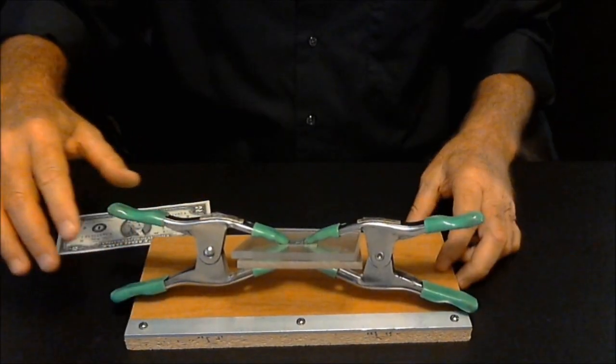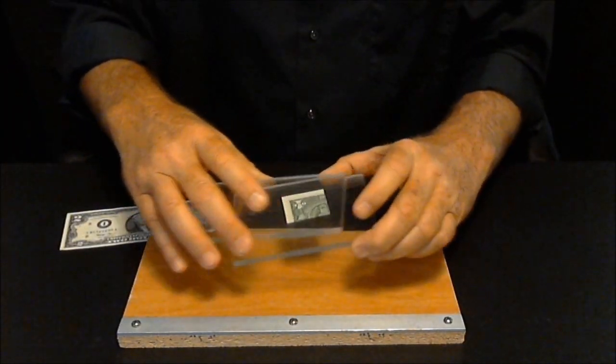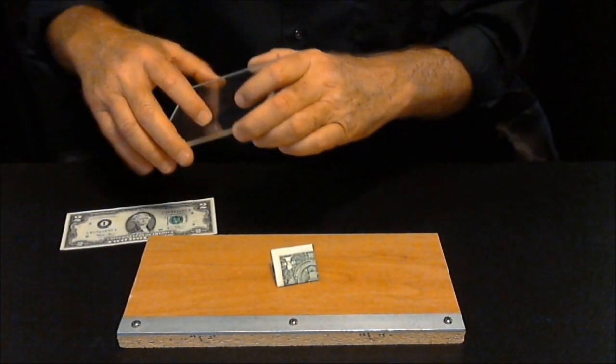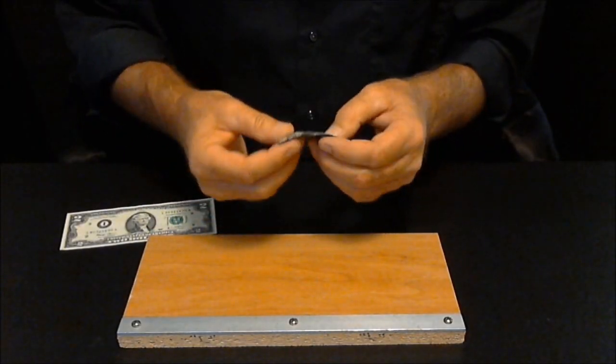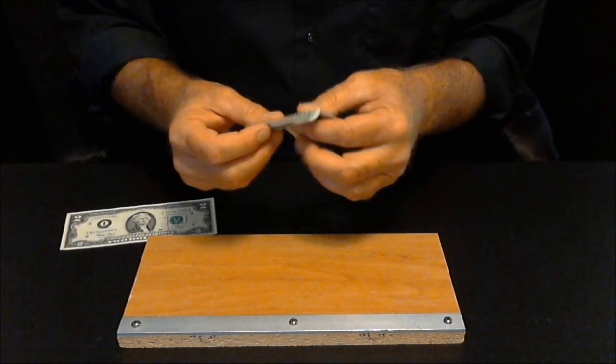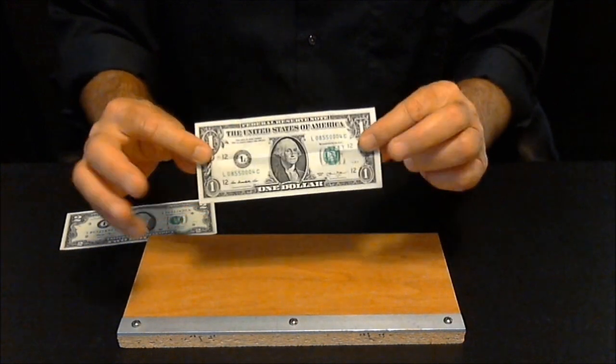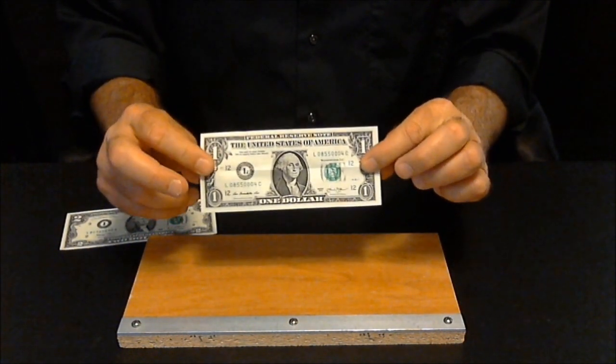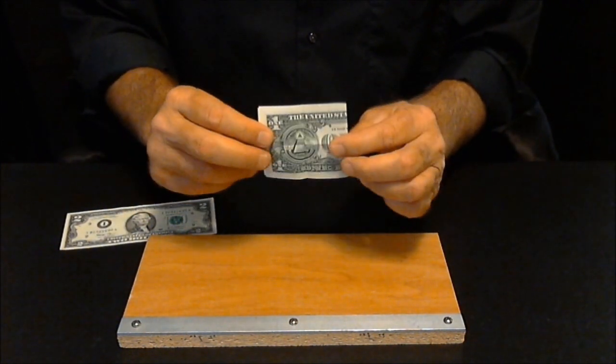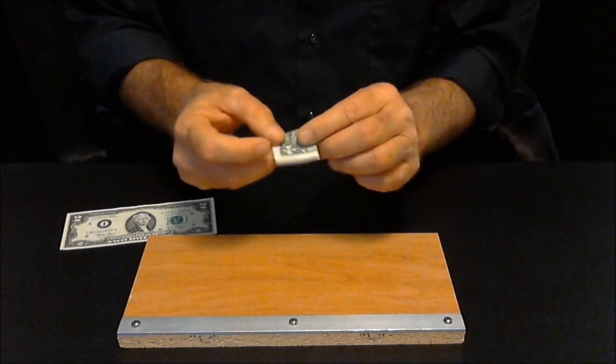Clamp it in. Leave it for a couple more minutes. This bill is done. It has all three folds. So when you open it up, it looks like this. There will be eight little squares. That's the first fold, second fold, third fold.